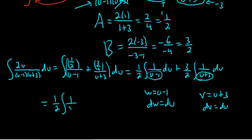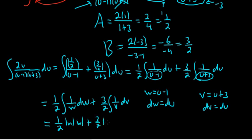It's fun to say v. So this is equal to 1 half. 1 over w, dw, plus 3 halves. 1 over v, dv. And so these are going to give you natural logs. This is 1 half. Ln, absolute value of w, plus 3 halves. Ln, absolute value of v, plus c.